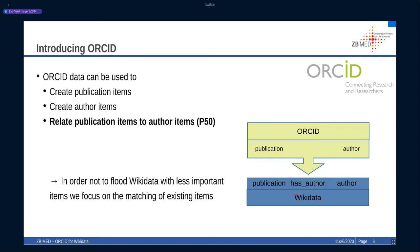Based on ORCID, we could easily introduce even more publications and authors to Wikidata and establish the connections I already talked about between the existing items. After consultation with the community, we made the decision not to include even more items with few statements. Instead, we want to work on the improvement of the existing data.